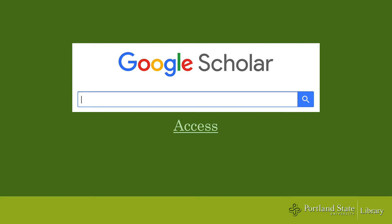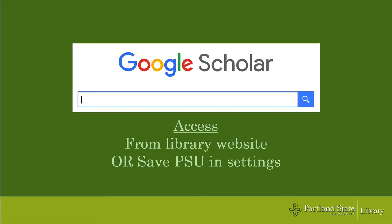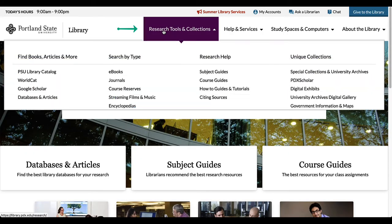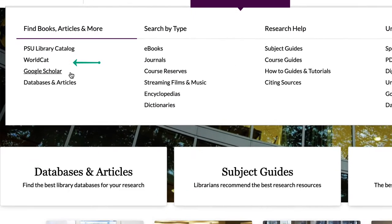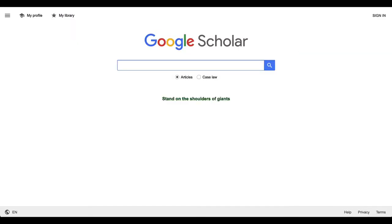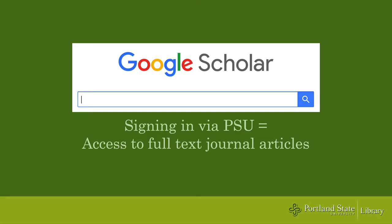It's best to go to Google Scholar from our library website, or to save Portland State University in your Google Scholar settings. To learn more about the settings option, see the video tutorial linked in the top right. Google Scholar is linked under the Research Tools and Collections tab on the library homepage. Once you've signed in, you'll get access to all the full-text journal articles that the library subscribes to.